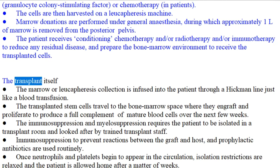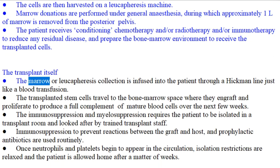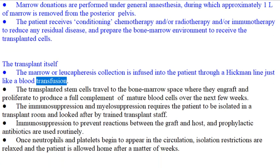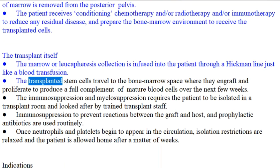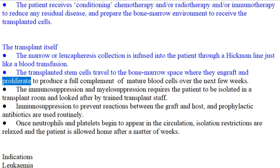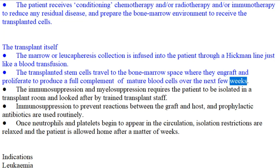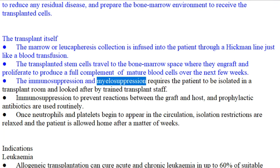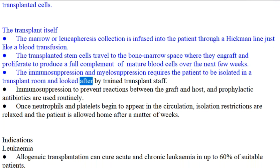The transplant itself: the marrow or leukapheresis collection is infused into the patient through a Hickman line, just like a blood transfusion. The transplanted stem cells travel to the bone marrow space where they engraft and proliferate to produce a full complement of mature blood cells over the next few weeks. The immunosuppression and myelosuppression requires the patient to be isolated in a transplant room and looked after by trained transplant staff.